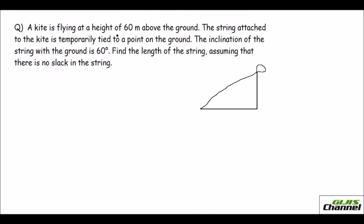A kite is flying at a height of 60 meters above the ground. The string attached to the kite is temporarily tied to a point on the ground. The inclination of the string with the ground is 60 degrees. Whatever they have given you, just mark it down in the picture. Find the length of the string assuming there is no slack in the string — so it is a straight string. I take this length as my X value.